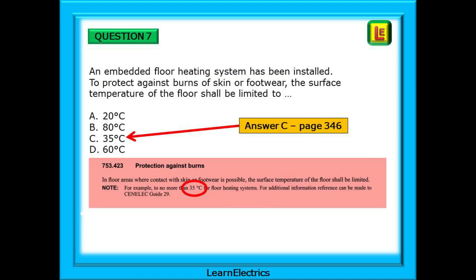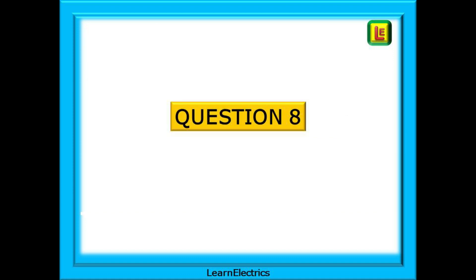You should choose answer C, 35 degrees Celsius or centigrade as shown in the pink box. When answering questions about temperature, remember that the wiring regs will always give temperatures in Celsius. Watch out for answers that are in Fahrenheit. They are included to try and catch you out. 35 degrees Celsius is the correct answer.